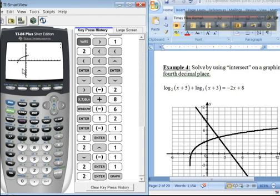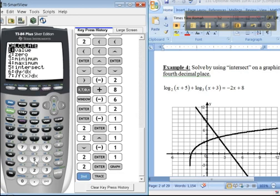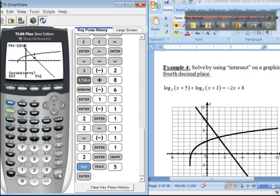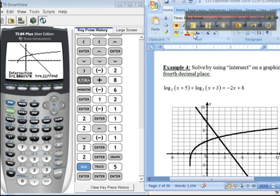There's the logarithm function coming through. The line will be there in a second. It's a little slow. And then, of course, to find the intersect, you go second, calc, number 5, yes, enter, enter, enter. And there it is. That's how to do that. All right. I think that's the end of all these videos. I hope you've enjoyed them. If you have any questions, email me.